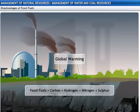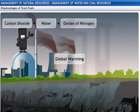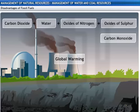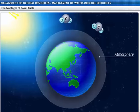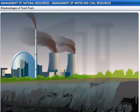Fossil fuels contain carbon, hydrogen, nitrogen, and sulfur, which when burned create carbon dioxide, water, oxides of nitrogen, and oxides of sulfur. When they are burned with less oxygen, carbon monoxide is formed. A lot of these gases are poisonous at high concentrations. Also, carbon dioxide is a greenhouse gas, which contributes to global warming. Therefore, it is important to use coal and petroleum reserves carefully. Not only are these fossil fuels scarce, they also lead to a lot of environmental hazards.